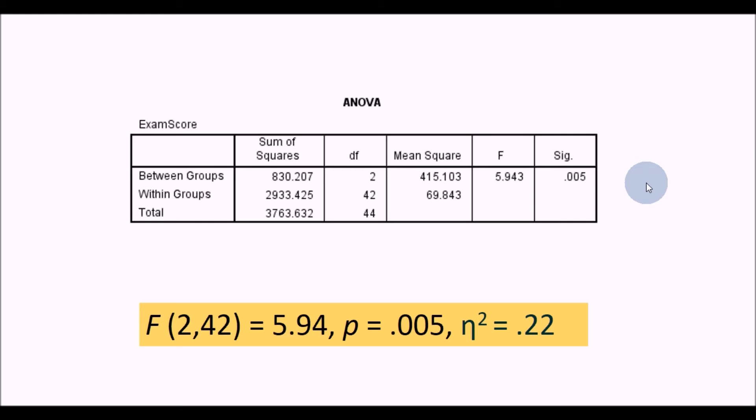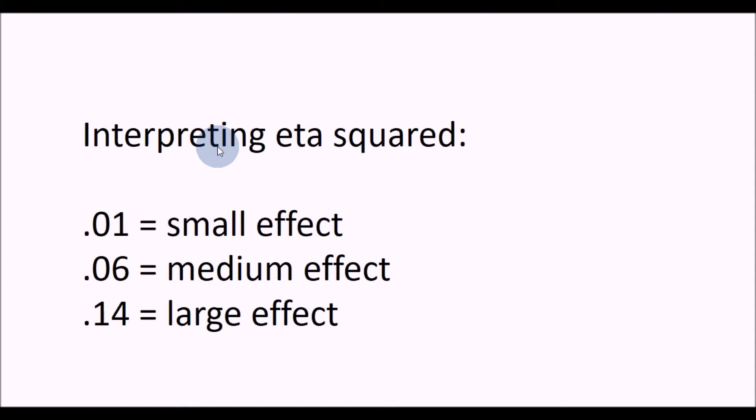To report eta squared, you've got all your other test statistics here, and you just report the effect size at the end after the p-value. It helps to interpret the size of this as well. To interpret eta squared, you can use these guidelines: eta squared of 0.01 represents a small effect - that's representing the fact that only 1% of the variance in exam scores would be explained by the model. Eta squared of 0.06 is a medium effect, and anything around about or above 0.14 would be deemed a large effect. For our example, eta squared was 0.22, so that would be a large effect size.